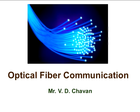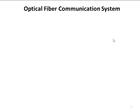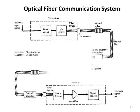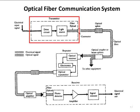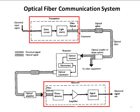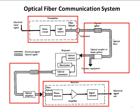Welcome. In today's lecture I will explain the detailed block diagram of an optical communication system. Like any other communication system, optical communication system also consists of three main components: first is the transmitter, then receiver, and the channel or medium to carry the optical signal.